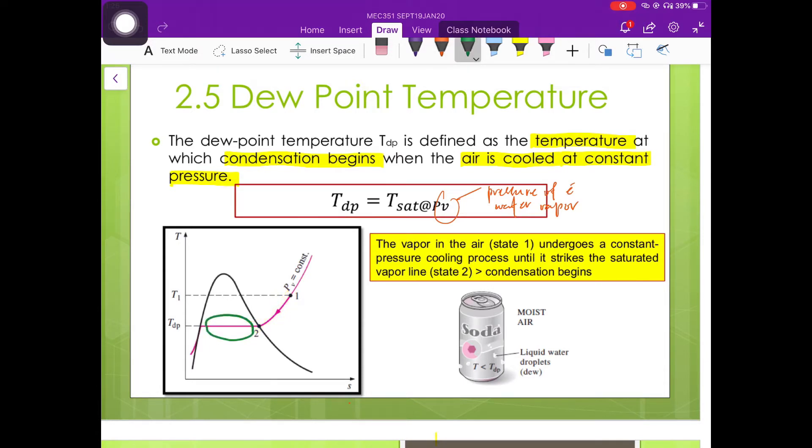Since we know that the region under the dome shape is representing the mixture phase where part of the phase is in liquid and part of it is in vapor.